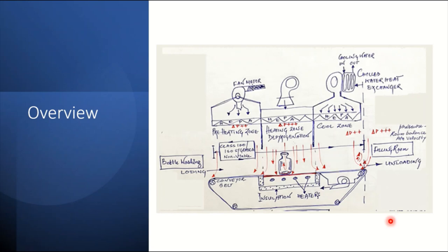This is the conveyor belt that helps travel the vial from this end to that end. This is the overall sketch of the tunnel just for brief understanding.